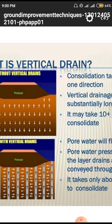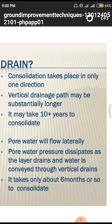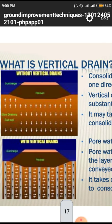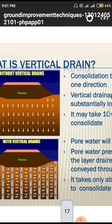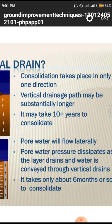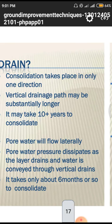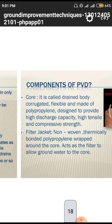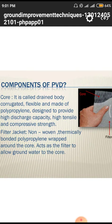Consolidation without drains can take more than 3,650 days. But using PVD — prefabricated vertical drains — the wait is only about six months, approximately 180 days, for full consolidation with no remaining water in the soil.